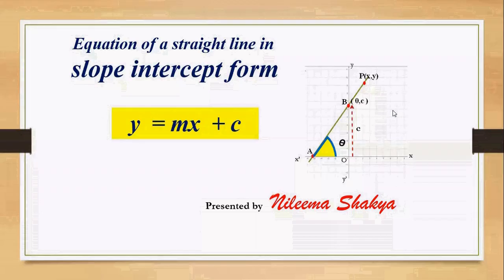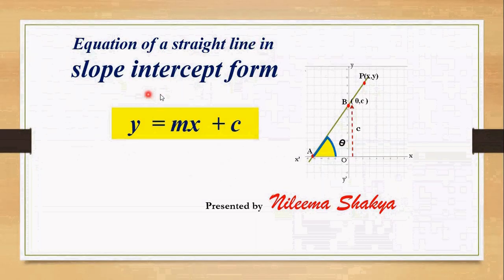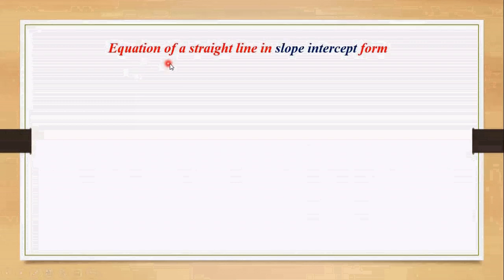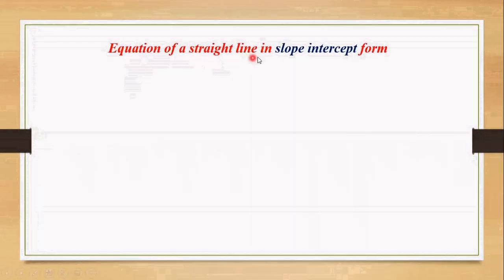Hello students, in this class I'm going to derive the equation of a straight line in slope-intercept form, that is y equals to mx plus c. Equation of a straight line in slope-intercept form.